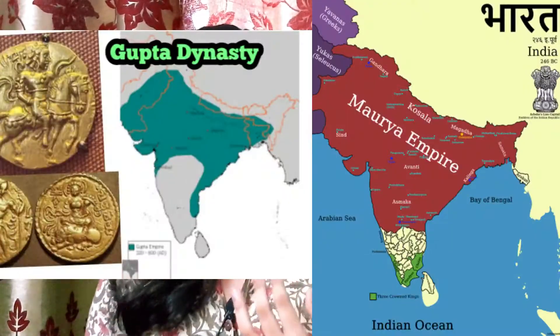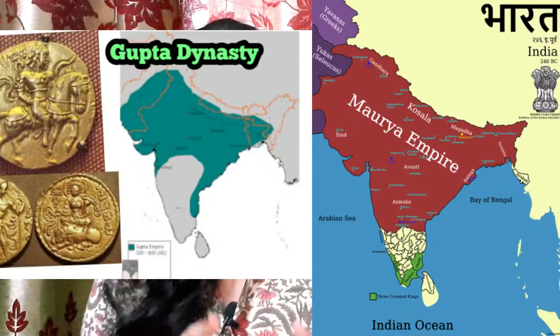India is one of the oldest systems to have accepted administrative law. Indians have always been focused on proper administration and functioning of society. The earliest form of centralized administrative law can be seen in the Mauryan period and the Gupta period.